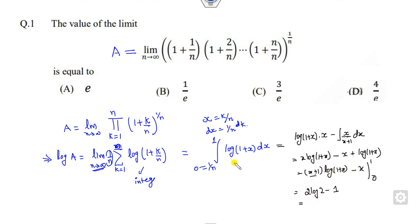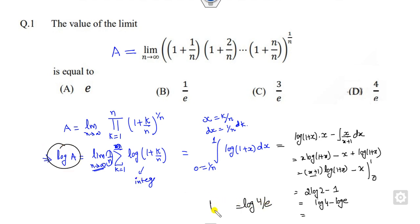So the result is 2 log 2 minus 1, which I can write as log 4 minus 1. Writing 1 in terms of e, this is log(4/e). On the left-hand side, this is log A. But we need the answer for A, so the answer is A = 4/e, which is the right answer.